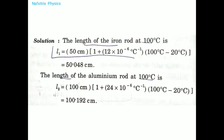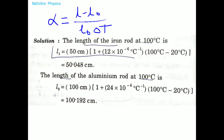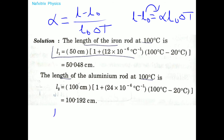To find the length of the iron rod at 100°C, we use the derived formula. Starting from the definition: alpha = (L - L₀) / (L₀ × ΔT), rearranging gives L - L₀ = alpha × L₀ × ΔT. Taking L₀ to the other side and factoring, we get L = L₀(1 + alpha × ΔT).